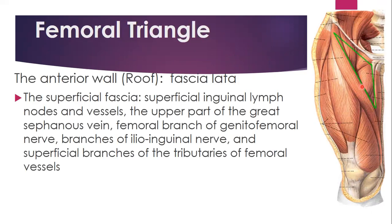The roof of this triangle is formed by the fascia lata, and also the superficial fascia containing the superficial inguinal lymph nodes and vessels, the great saphenous vein, and the genitofemoral nerves, the inguinal nerves, and superficial branches of the femoral vessels.